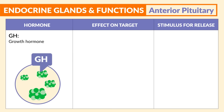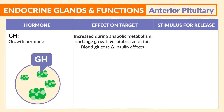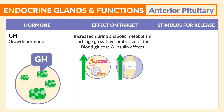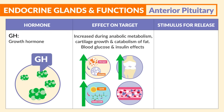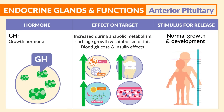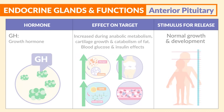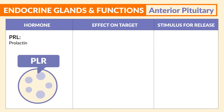Next is GH, growth hormone. This increases during anabolic metabolism, as well as cartilage growth and catabolism of fat, as well as blood glucose and insulin effects. And its stimulus is normal growth and development.